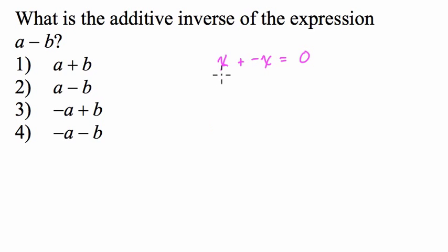So with that being said, let's say x is our expression, a minus b. So we have to add a minus b to its opposite and get a result of zero. So what do we have to add to a minus b to get zero?